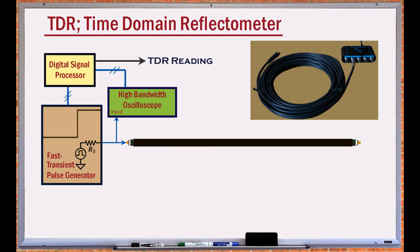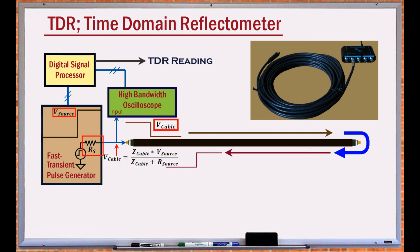Generally, in these instruments, the generator outputs a fast transition pulse. This pulse travels to the end of the cable and reflects back. But first it is divided by the voltage divider formed due to the source resistance and the cable impedance.